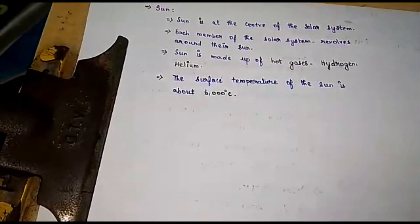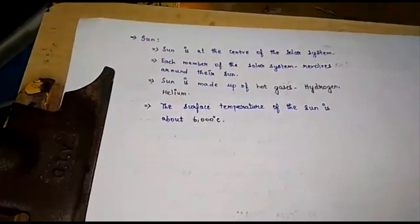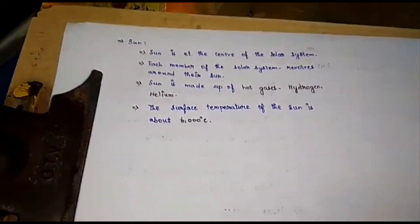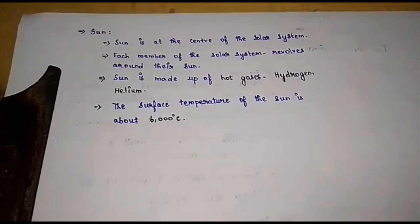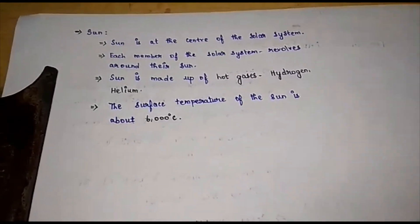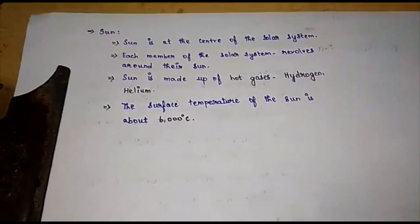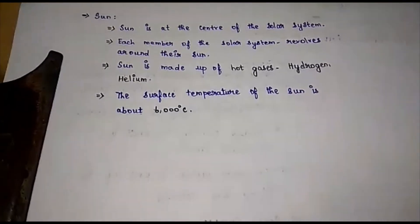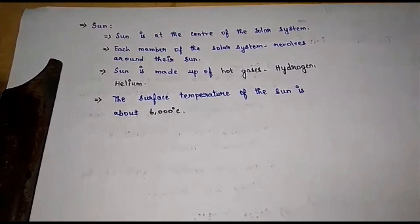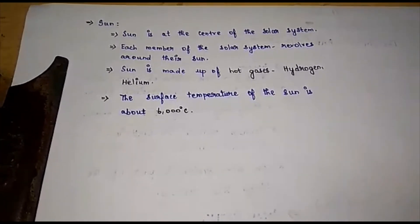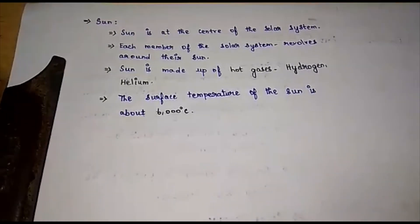Sunlight takes about 8.3 minutes to reach the earth. Which planet is next to the sun? Mercury, Venus and Earth. Earth will be the third. So the sunlight will reach the earth in 8.3 minutes.